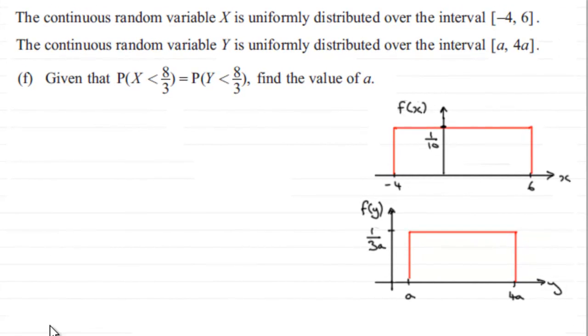Hi. Now in the last part of this question, we're given that the probability of X is less than 8 thirds equals the probability of Y being less than 8 thirds. And we've got to find the value of A.